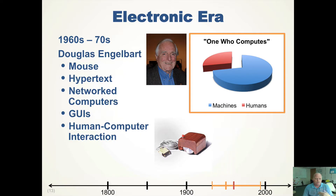In the sixties and seventies, Douglas Engelbart was a very visionary person. He invented things like the mouse. He didn't invent hypertext, but he implemented a system that used hypertext — the idea going back to Vannevar Bush. He implemented network computing and Ethernet, had a GUI — a graphical user interface instead of just text — and contributed many ideas around human-computer interaction. He was a very influential person in computing history.